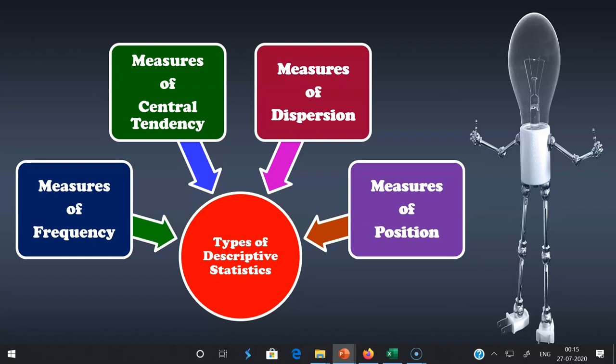The second type is called measures of central tendency. It consists of mean, median, and mode. It locates the distribution by various points, and it is used when we want to show how on average or most commonly indicated responses.